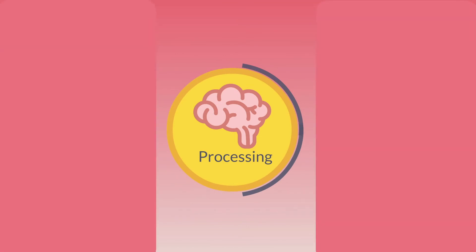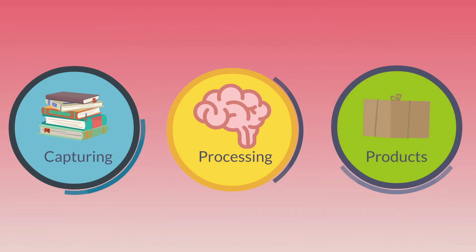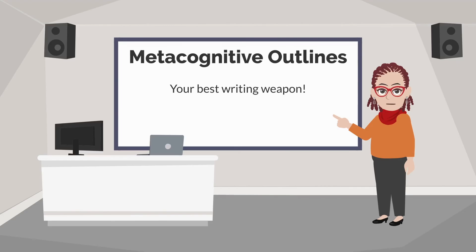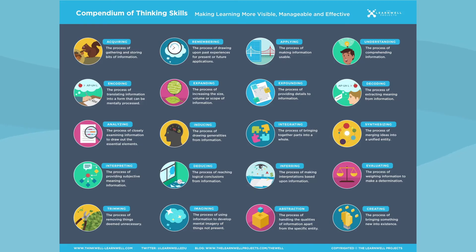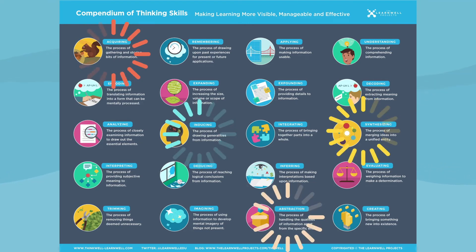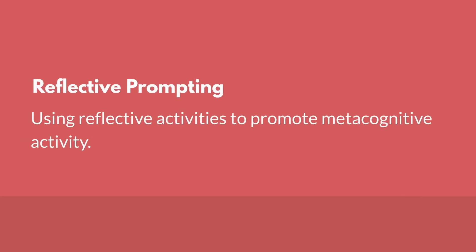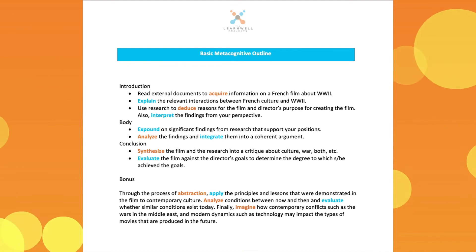Metacognitive outlines work because they separate the cognitive processing elements of writing from the other two elements. They provide necessary direction for the content and help students efficiently convert the content into the ultimate writing product. First, Dr. Miller generated essential buy-in from her students by assuring them that if they did the cognitive work up front, writing would be much more doable. She used the compendium of thinking skills to help students identify the cognitive skills they would need. Before turning her students loose, she used the reflective prompting tactic, requiring students to apply the metacognitive outline to a paper they had previously written. Her strategy worked better than she could have ever imagined.